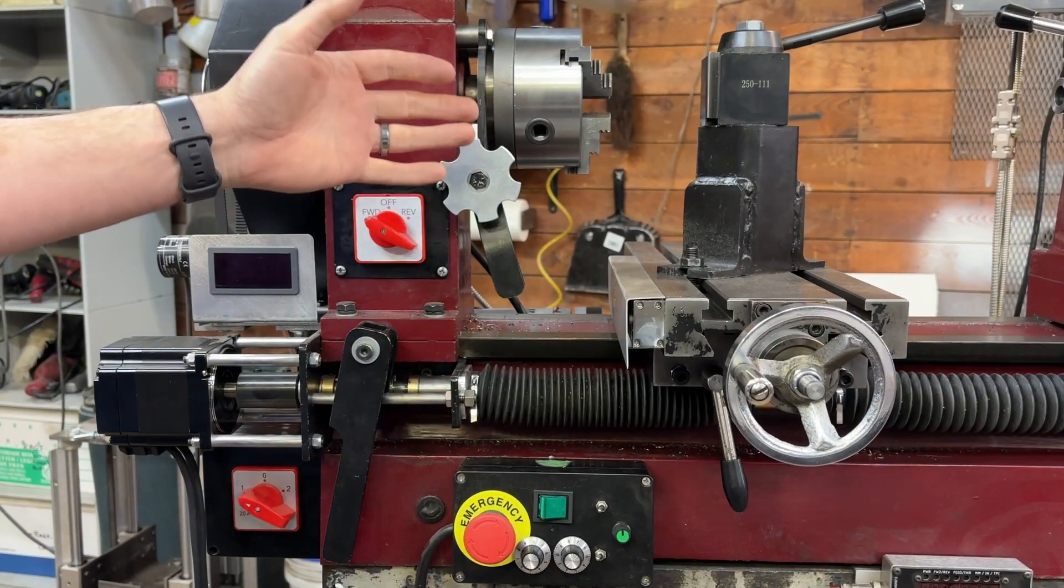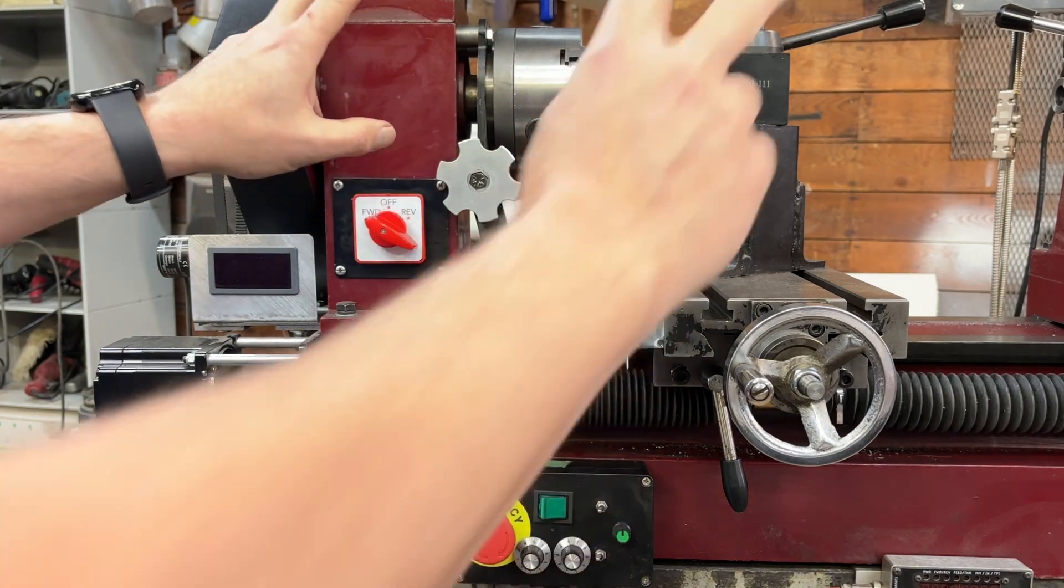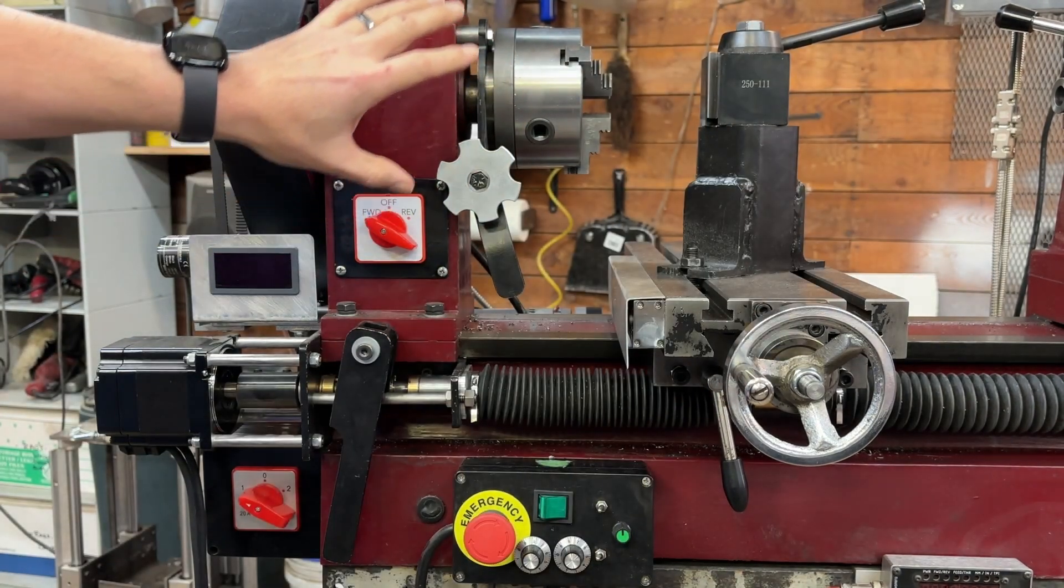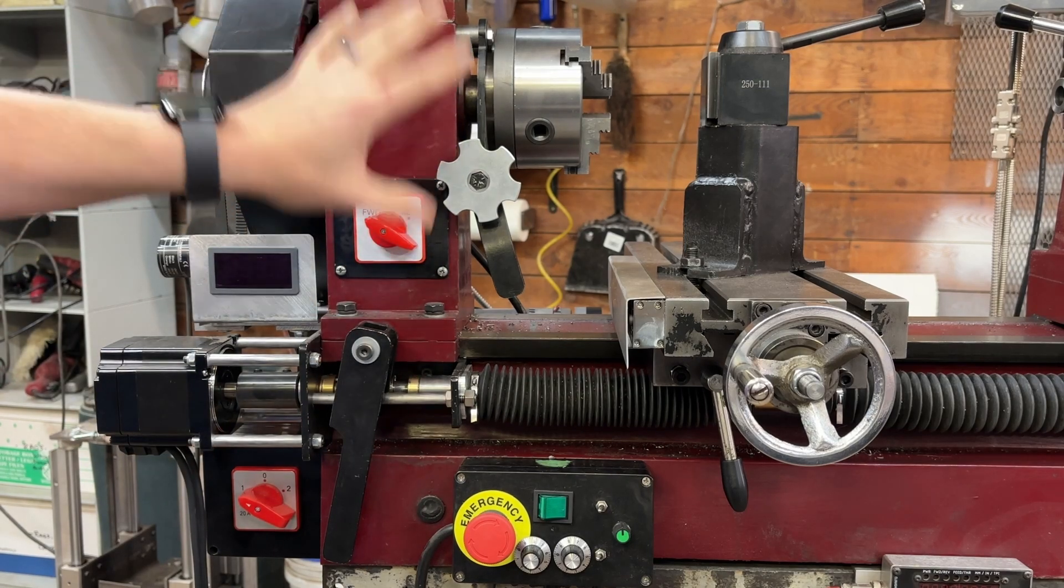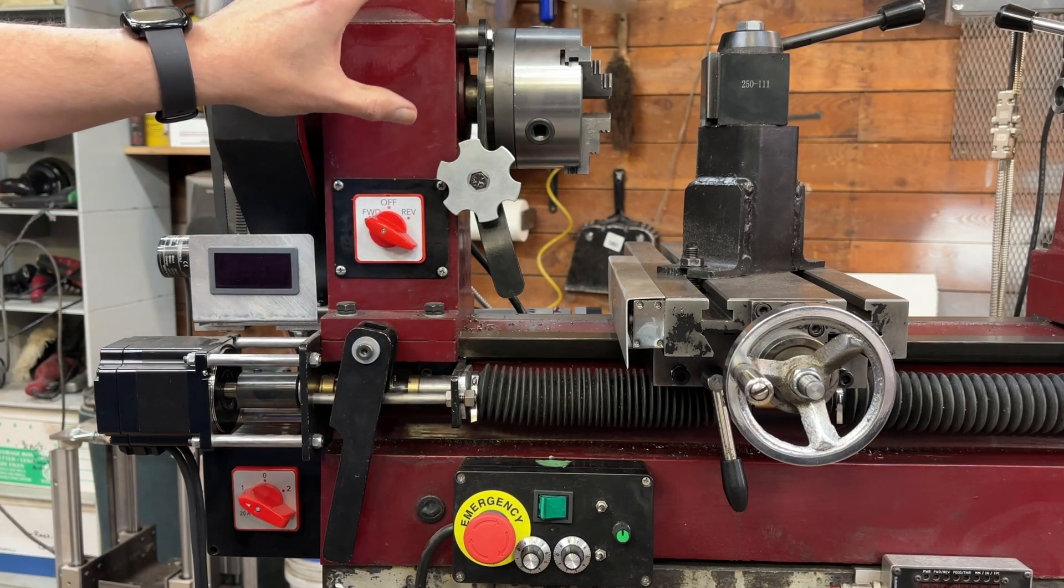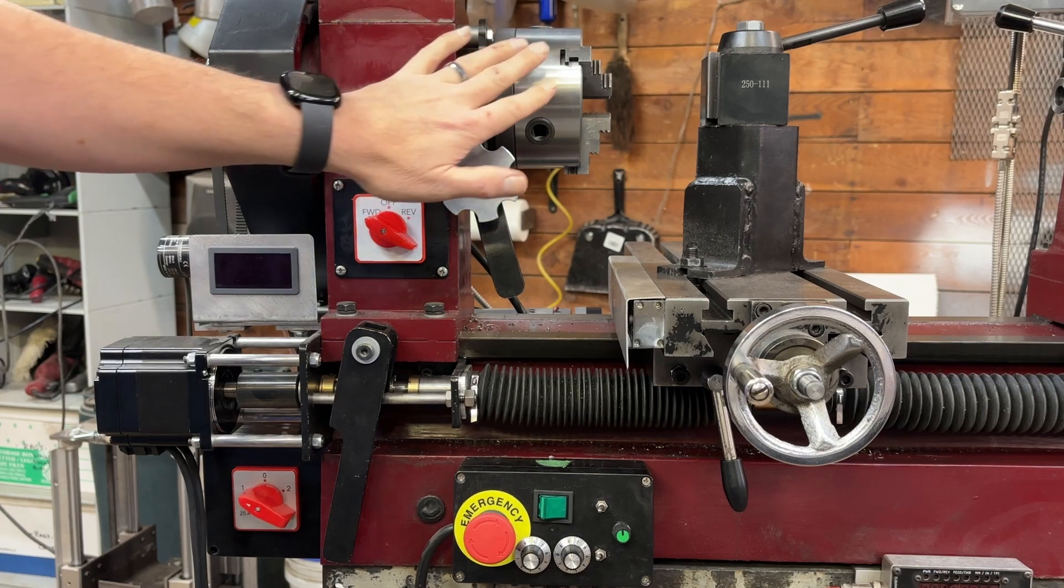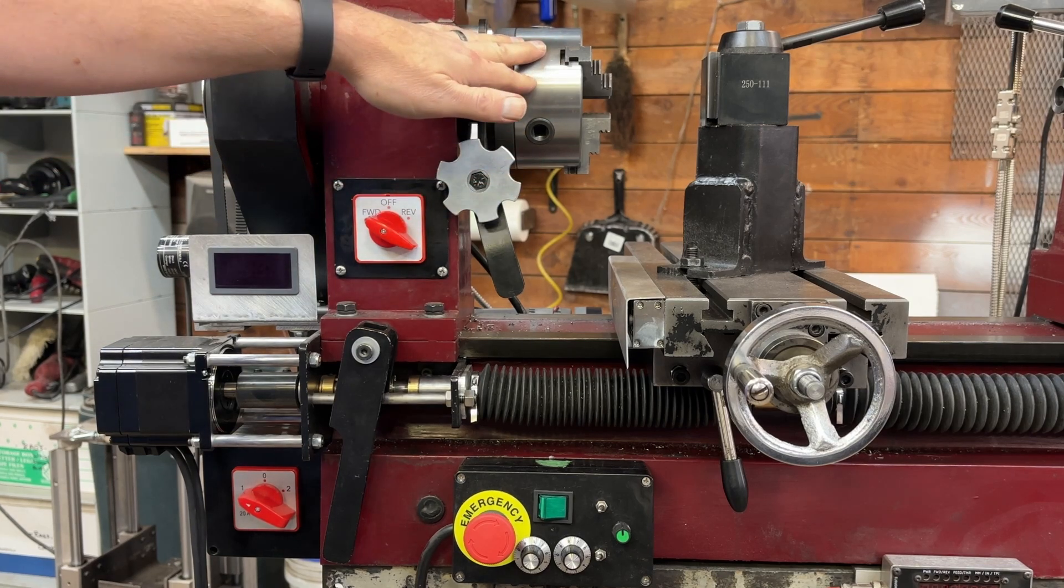So this was supposed to be my triumphant demonstration of my automatic braking system on my mill lathe combo. Let me first show you it's set up with the brake disconnected and just the normal action of the spindle when you go to stop it.